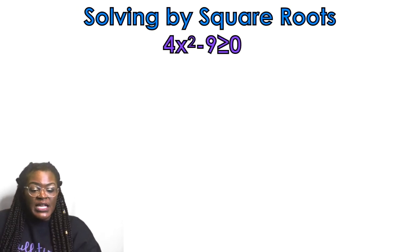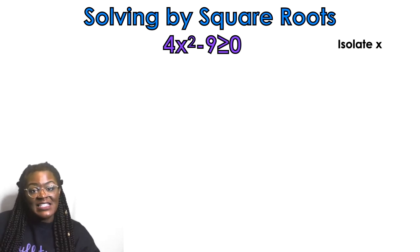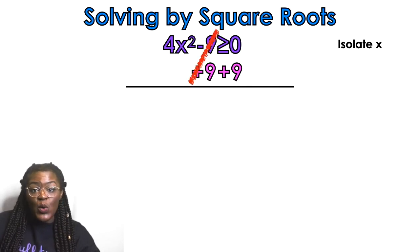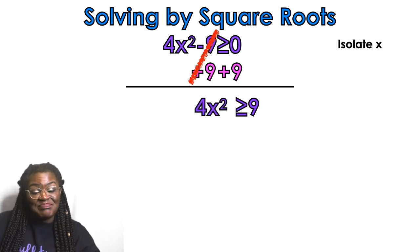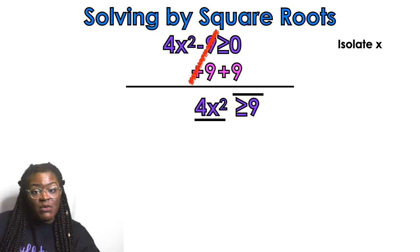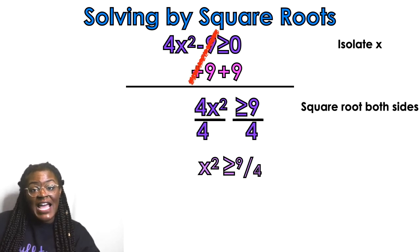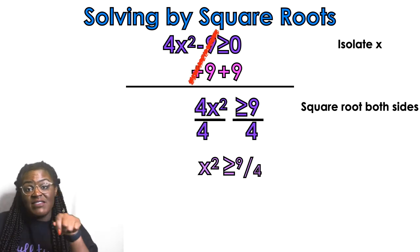Let's do example number two. I'm solving by square roots, so I need to isolate x. I want to move that negative 9 to the other side, so I'm going to add 9 to both sides. That leaves me with 4x squared is greater than or equal to 9. Now I need to get rid of that 4, so I divide both sides by 4 and get 9 over 4. I'll leave it as a fraction. Remember, to get rid of that squared, I take the square root of both sides.